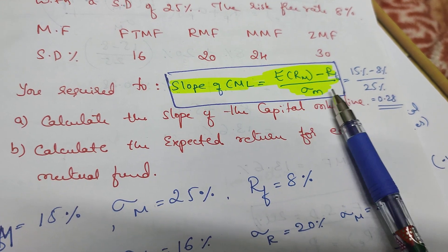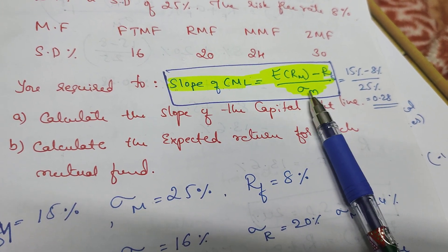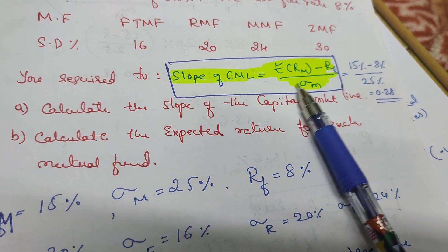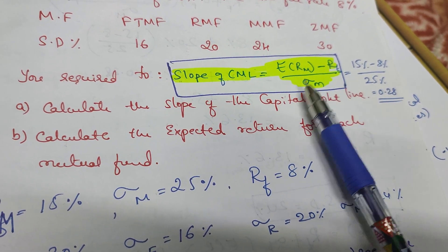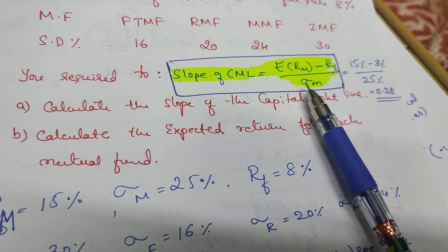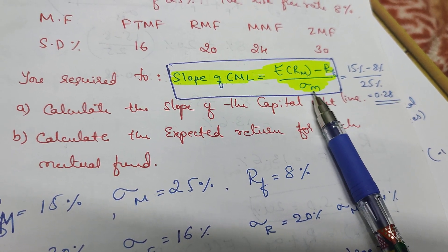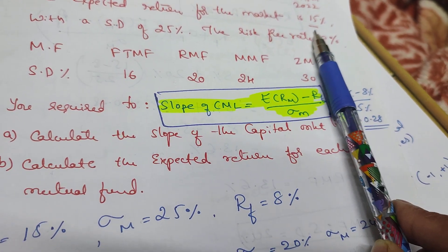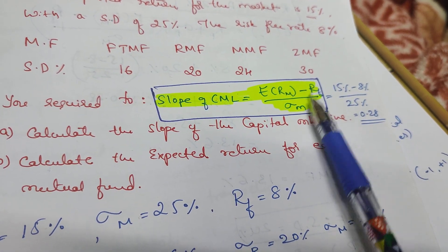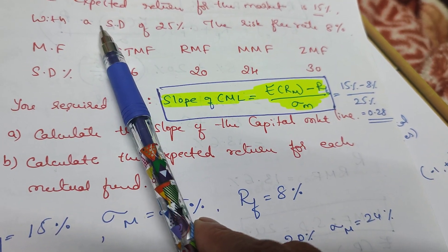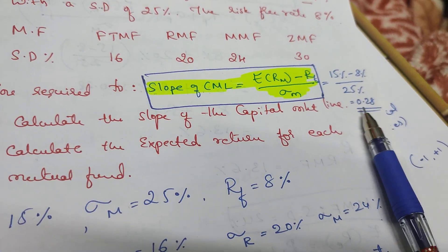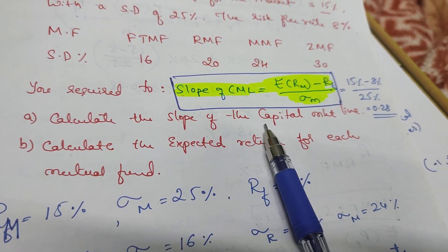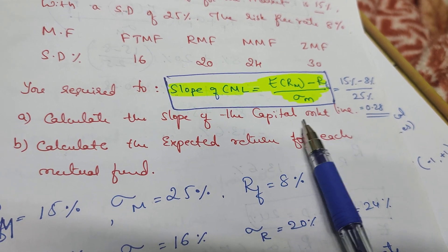Now, first find the slope of the CML. The formula for the slope of the capital market line is: expected return of the market minus risk-free rate, divided by standard deviation of the market. That is 15% minus 8%, divided by 25%, which comes to 0.28. Okay, that answers the first question — the slope of the capital market line.